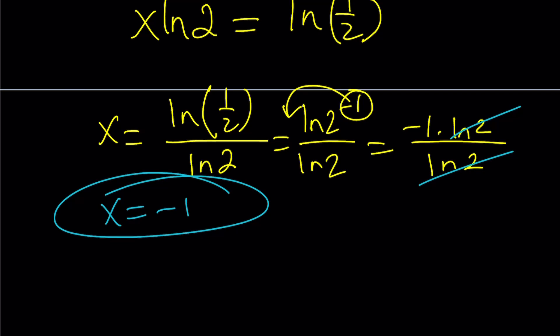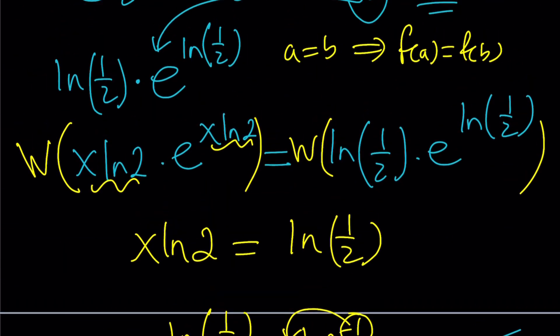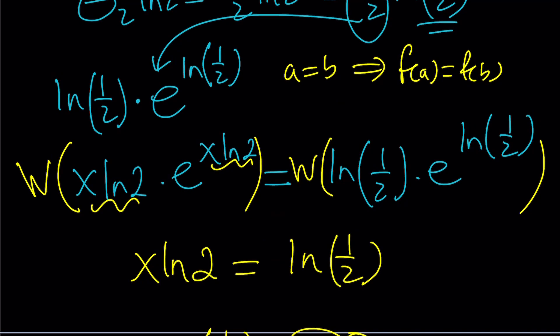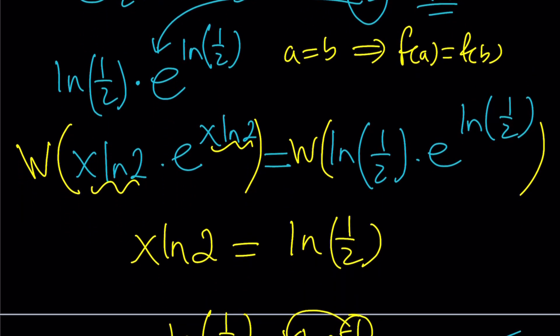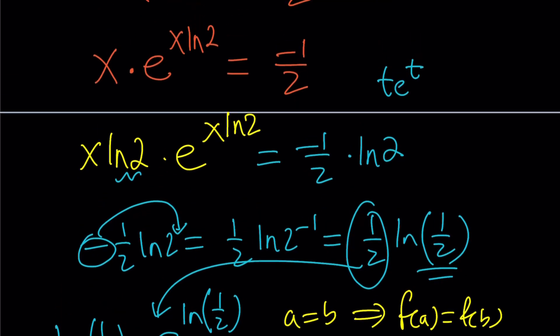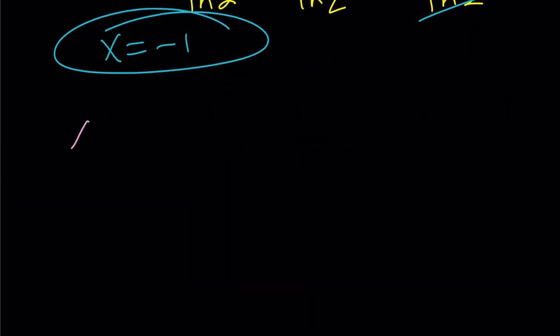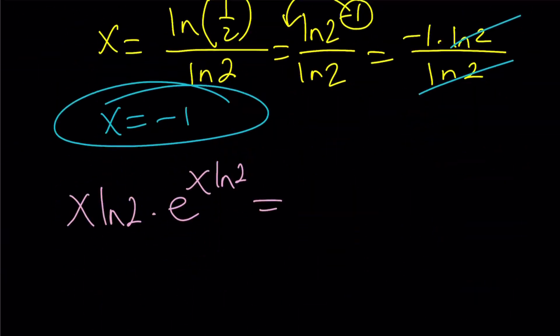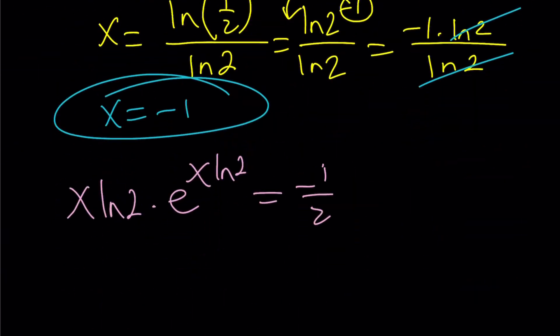Remember, we kind of worked on the left-hand side but did not work on the right-hand side. Well, we kind of did, and we got to this point. So I'm going to pick it up from here. I'm going to use this. x ln 2 times e to the power x ln 2 equals negative 1 half ln 2.